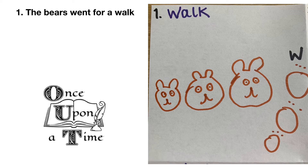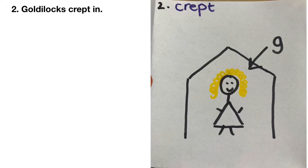Can you turn and tell your grown-up or your teddy what happens next? Next, Goldilocks crept into the cottage. Now 'crept' means to walk very, very quietly. In the next box of my story map I have drawn the cottage and Goldilocks inside. I have written the word 'crept' next to number two, and I have also labelled Goldilocks with a G.